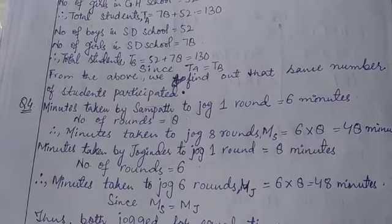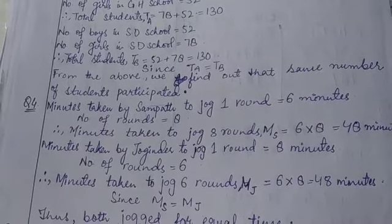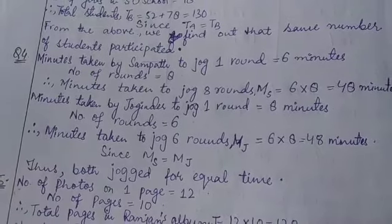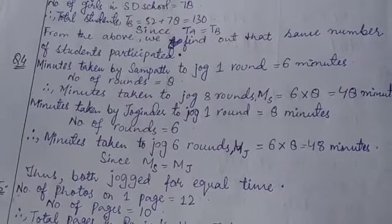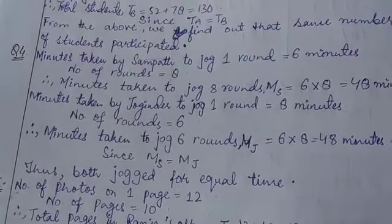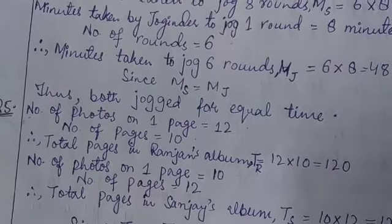Now the minutes taken by Joginder to jog one round, that is 8 minutes. Total rounds: 6. So total minutes taken to jog 6 rounds, that is MJ, that is for Joginder, that will be equal to 6 into 8, that is 48. Since both minutes are coming out to be same, since MS is equal to MJ, thus they both jogged for equal time.